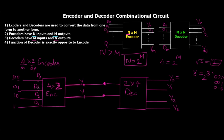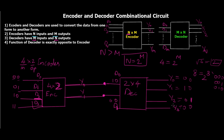Similarly, if the encoder output is 01 — meaning D1 was active — then Y1 is activated and the rest are zero. If D2 was active, the encoder output is 10, which is fed as input to the decoder, and Y2 goes high while the rest are zero. D3 maps to Y3 in the same way, recovering the original data lines at the decoder output.